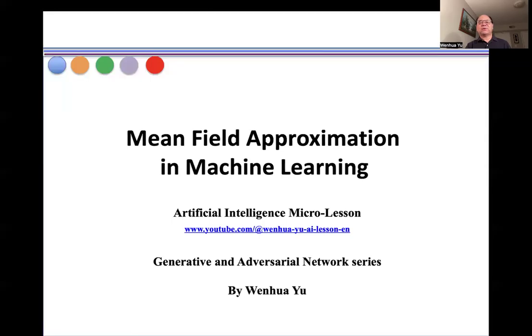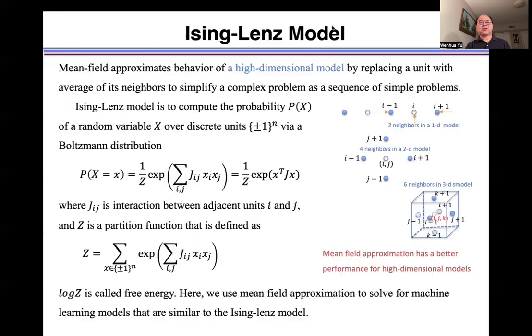In this video, I introduce the mean field approximation in machine learning. The mean field approximates behavior of a high dimensional model by replacing a unit with the average of its neighbors to simplify a complex problem as a sequence of simple problems.